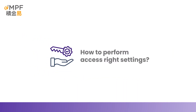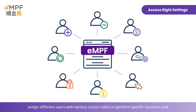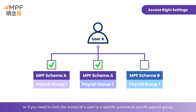How to perform access right settings on the EMPF platform. The access right control on the EMPF platform allows companies to assign different users with various access rights to perform specific functions and access particular information according to actual needs. If you need to control a user's access to specific functions, such as new employee enrollment or making contributions, or limit a user's access to a specific scheme or payroll group, you may find this access right control function helpful.